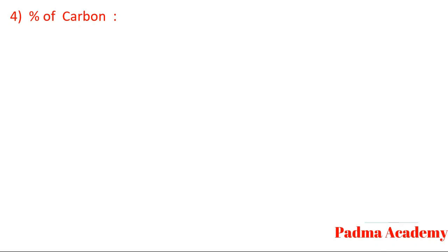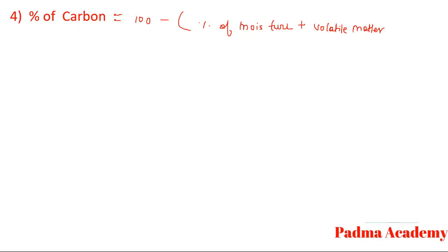The percentage of carbon (fixed carbon) is calculated as: percentage of carbon = 100 minus (percentage of moisture plus percentage of volatile matter plus percentage of ash). This is how the percentage of carbon is calculated from coal.